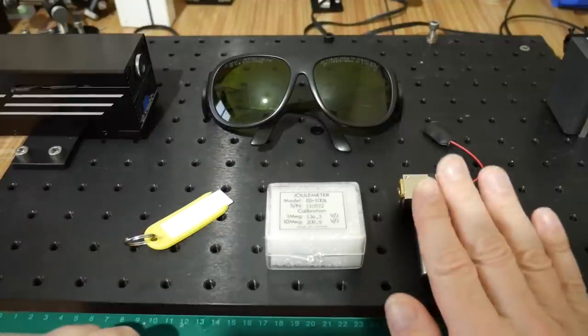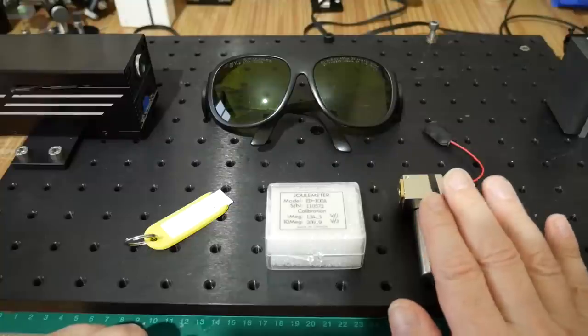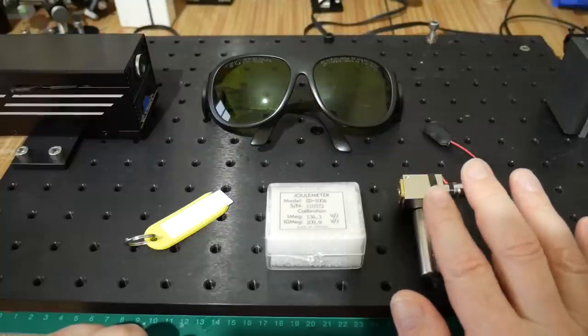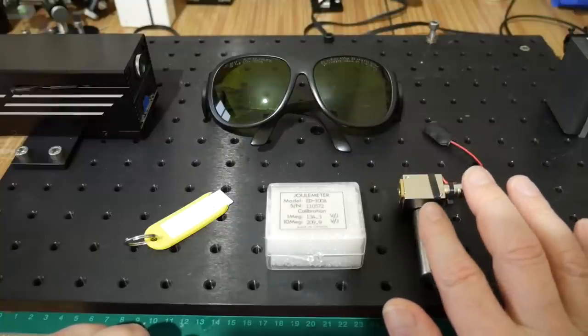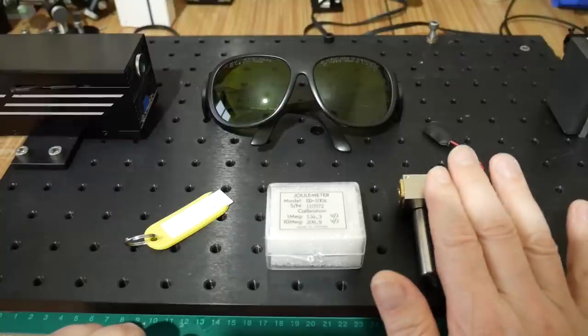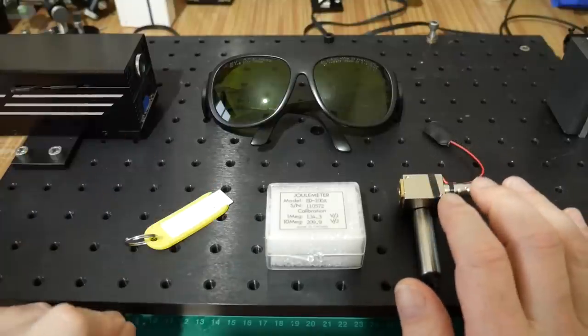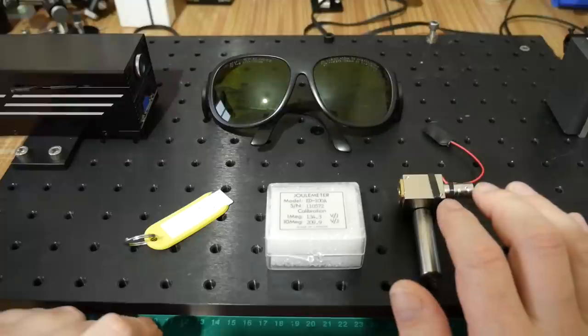I've got two sensors here. The one on the right is a photodiode from Thor Labs, this is a fast photodiode. If memory serves the rise time is on the order of about 35 picoseconds or so and we can use this to measure the pulse width of the laser output itself.